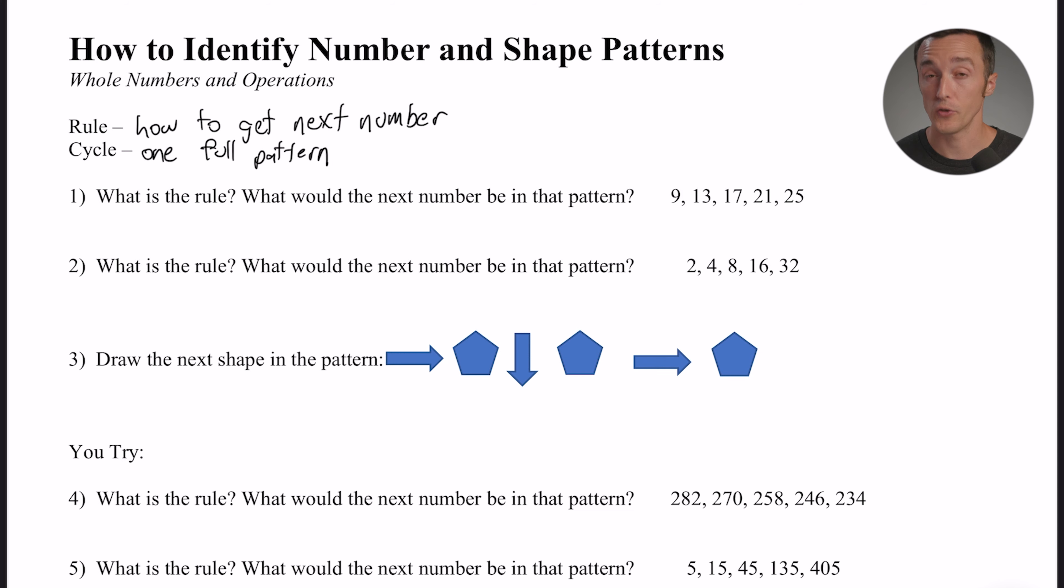Patterns can get extremely complicated, but it's important to first just check your basic arithmetic functions: addition, subtraction, multiplication, or division. So to go from a 9 to a 13, how would I increase? Well, that would be a plus 4. Let's check and see if that works for the rest of them. If I go from 13 to 17, that would also be a plus 4. 17 to 21 would also be a plus 4, and 21 to 25 would also be a plus 4.